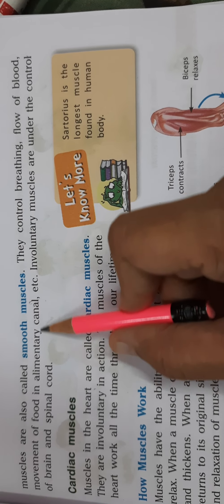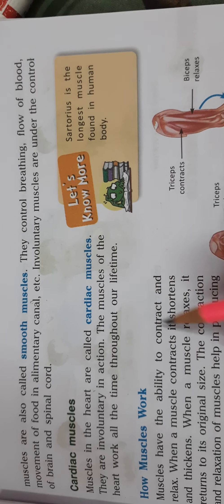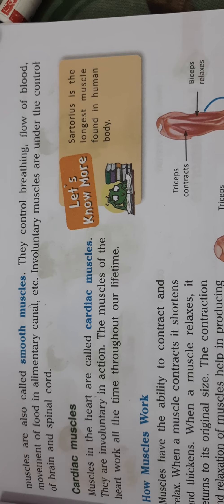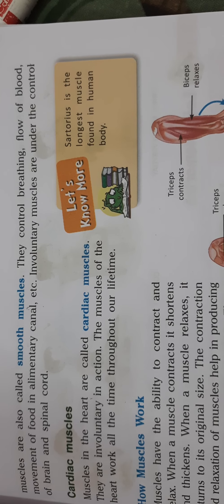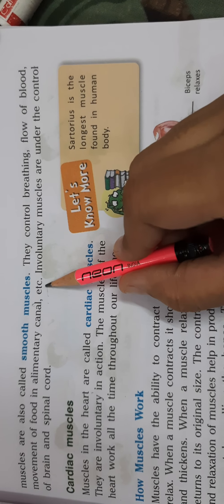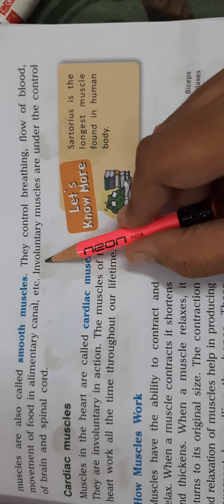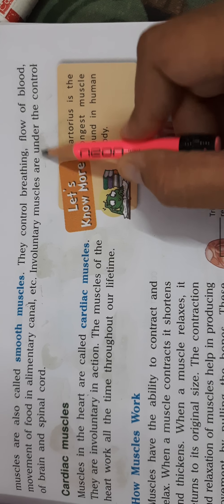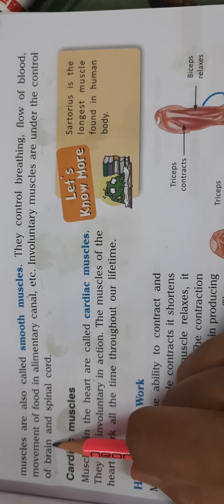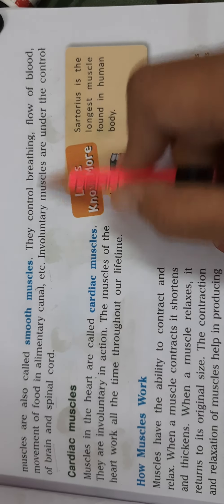Involuntary muscles control our breathing, flow of blood, and movement of food in the alimentary canal — that means all through the digestive system, they control the movement of food and other movements as well.